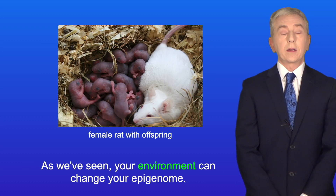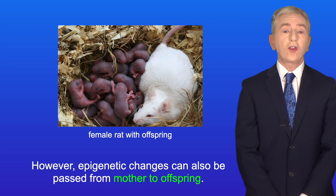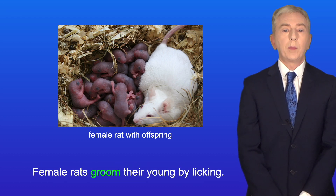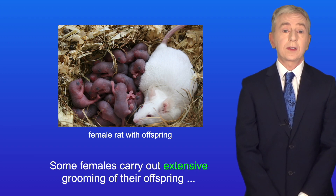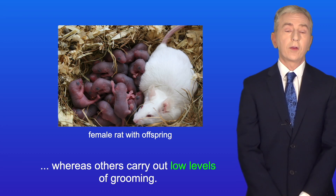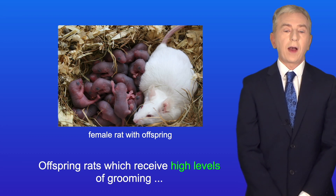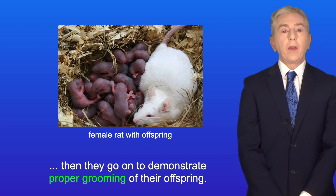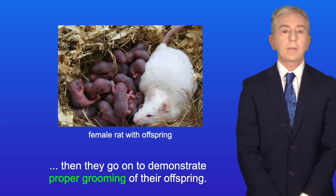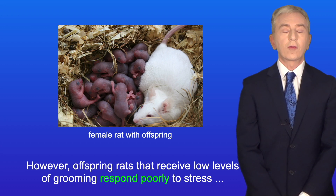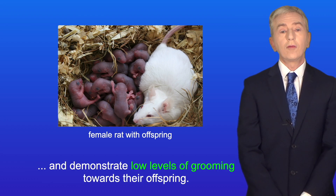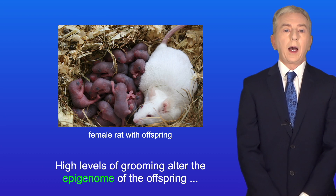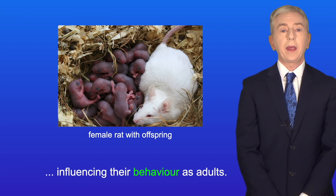Your environment can change your epigenome, and epigenetic changes can also be passed from mother to offspring. A good example is seen in rats — female rats groom their young by licking. Some females carry out extensive grooming of their offspring whereas others carry out low levels of grooming. Offspring that receive high levels of grooming develop into adult rats that respond well to stress, and if female, they go on to demonstrate proper grooming of their own offspring. However, offspring that receive low levels of grooming respond poorly to stress and demonstrate low levels of grooming towards their offspring. It's thought that this behaviour is due to epigenetic changes — high levels of grooming alter the epigenome of the offspring, influencing their behaviour as adults.